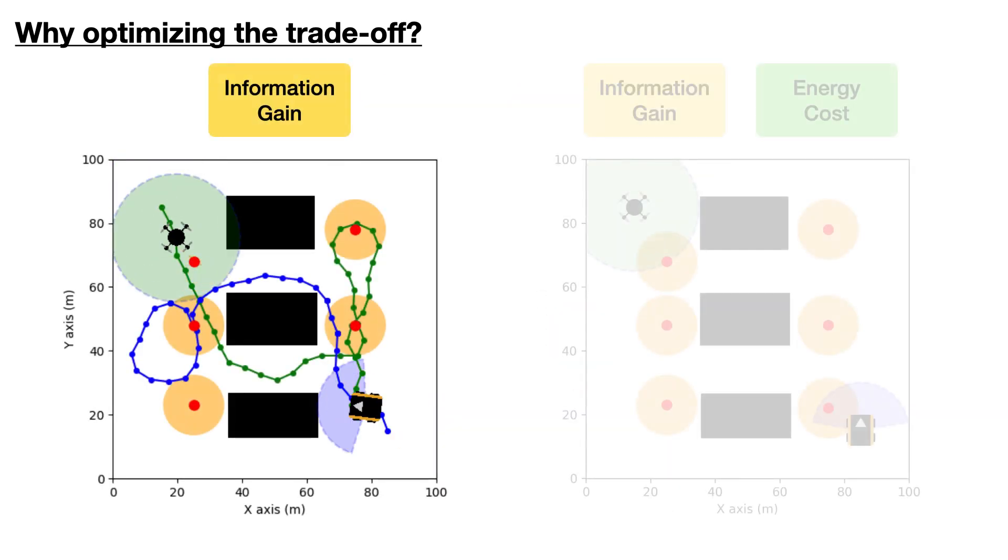When only optimizing for information, robots tend to travel more in order to take more measurements, and there is more overlap between the two robots' sensing areas.